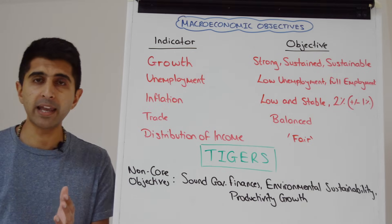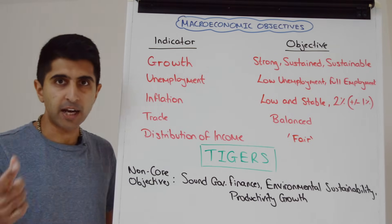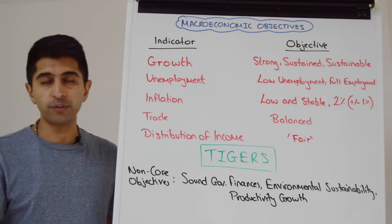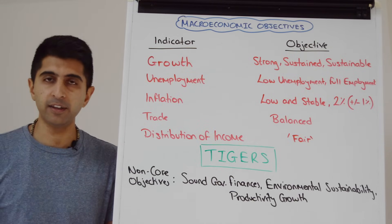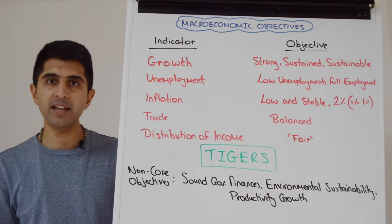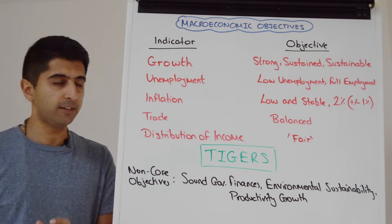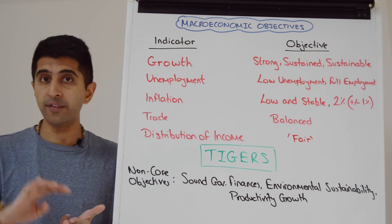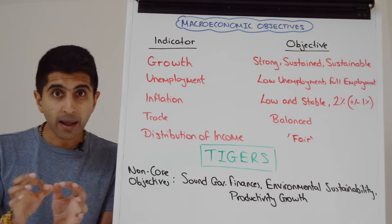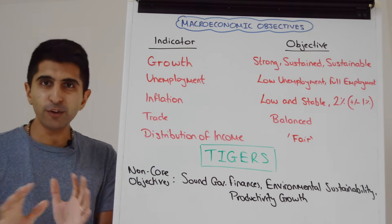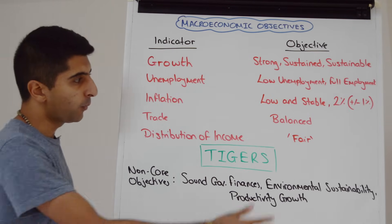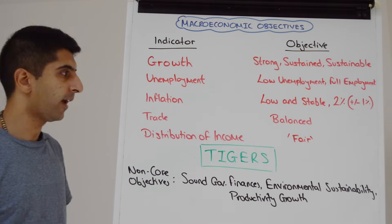When it comes to trade, we are looking at balanced trade as our objective — balance between the value of exports and the value of imports. Trade deficits, where the value of imports exceeds the value of exports, are deemed to be quite bad. But even trade surpluses, where the value of exports exceeds the value of imports, can have some negative consequences — maybe not as bad as a trade deficit, but still some negative side effects. That's why balance between exports and imports is the desired objective.